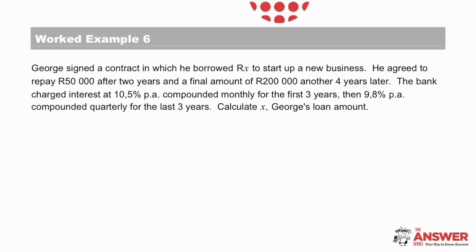We'll go through the question itself together without looking at the solution. In this question, George signed a contract in which he borrowed X rand. He agreed to pay 50,000 rand after 2 years and a final amount of 200,000 rand 4 years later, in other words, after 6 years. The bank charged interest at 10.5% per annum compounding monthly for the first 3 years and then at 9.8% per annum compounded quarterly for the last 3 years. We've been asked to calculate X, George's loan amount.